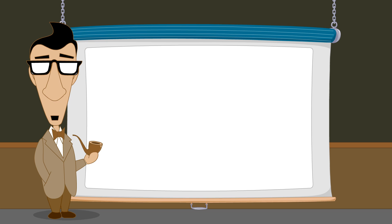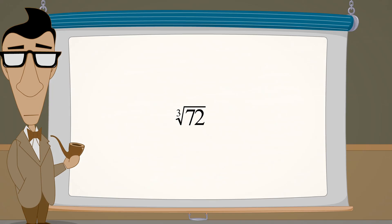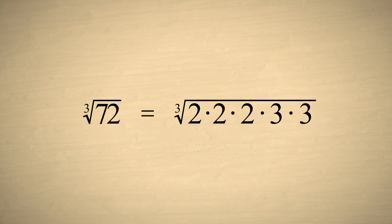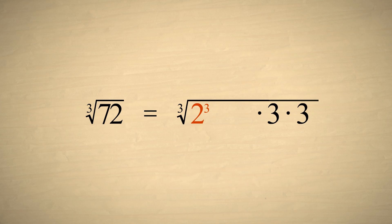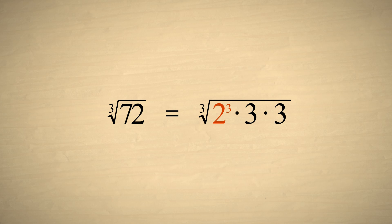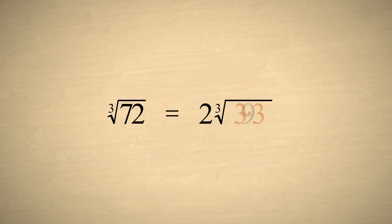For example, let's say we want to simplify the cube root of 72. Factoring 72, we see that 2 cubed is a factor. So this factor can be brought out from under the cube root. Since none of the remaining factors can be grouped into a perfect cube, they cannot be brought out. And we have 2 times the cube root of 9.